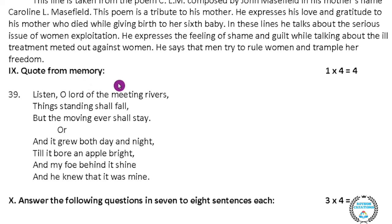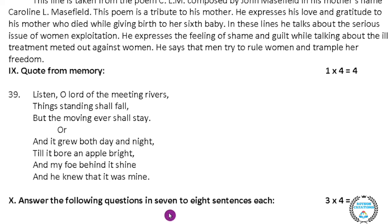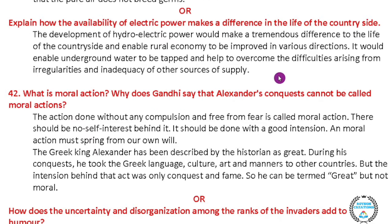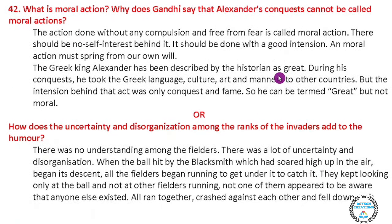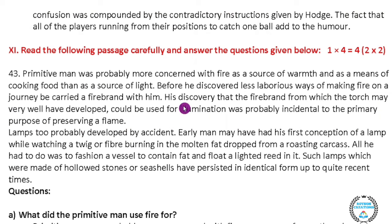Main number nine: quote from memory. They have asked the poem for memorization. They have given two stanzas and among those two stanzas, you have to write only one answer. Main number ten: answer the following questions in seven to eight sentences each. There are three questions and each question carries four marks, so twelve marks totally. The answers are given in PDF form in the description box — you can download them and practice for your final examination.